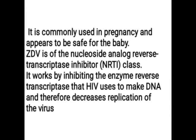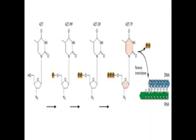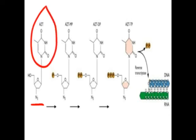Zidovudine can be used in pregnancy and is safe for the baby. It is a nucleoside analogue reverse transcriptase inhibitor that works by inhibiting the enzyme reverse transcriptase, which HIV uses to make DNA, thereby decreasing viral replication. In zidovudine, the base and sugar are present but instead of a hydroxy group, an azido group is present. Phosphorylation converts it into the monophosphate form.